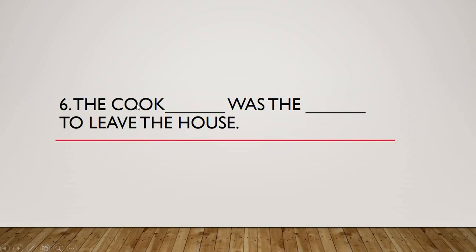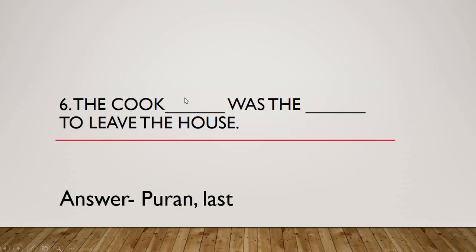Fill in the blanks Question 6: The cook dash was the dash to leave the house — two blanks. This is chapter four, because cook Puran is only in that story. The first blank is the name: Puran. The second blank refers to his order of leaving at the time of robbery. The answer: The cook Puran was the last to leave the house. Please repeat: The cook Puran was the last to leave the house.